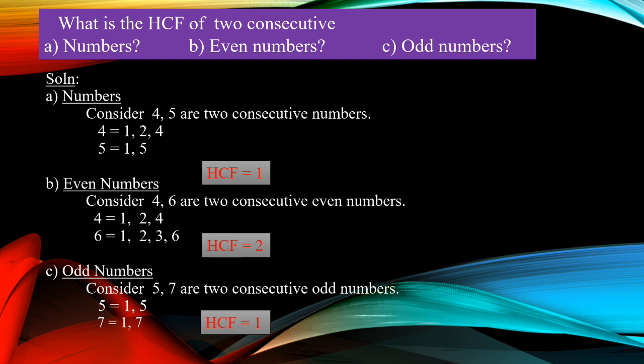Now, even numbers. Consider 4 and 6 are two consecutive even numbers — taking even numbers continuously. Factors of 4: 1, 2, 4. Factors of 6: 1, 2, 3, 6. Which is the common one? 1 and 2 — both are common. But which is the highest? 2 is the highest one. So, consecutive even numbers have a highest common factor of 2.